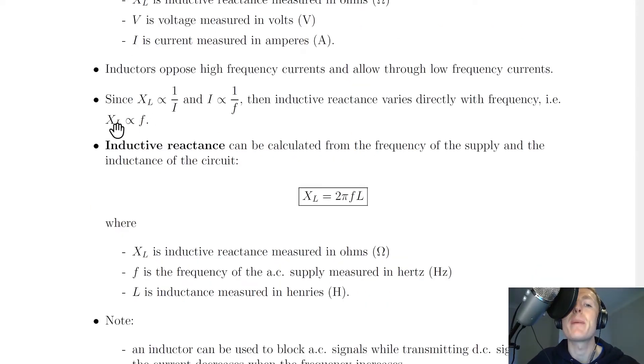So if we look at this relationship XL is proportional to F, we can work out why inductors oppose high frequency currents and allow through low frequency currents. So for low frequency currents first of all, when frequency F is small, that means the XL, the inductive reactance is small as well, which means it's going to allow through more current. However, if the frequency of the current is high, then that means the inductive reactance XL is also high, which means it's going to oppose the high frequency current.